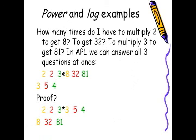Here's another example. How many times do I have to multiply 2 to get 8, to get 32? How many times do I have to multiply 3 to get 81? In APL, we can answer all three questions at once by saying 2, 2, 3 log 8, 32, 81. So: how many times to multiply 2 to get 8? How many times to multiply 2 to get 32? How many times to multiply 3 to get 81? The answer is 3, 5, and 4. You want the proof? Here it is: 2 exponent 3 is 8, 2 exponent 5 is 32, and 3 exponent 4 is 81.